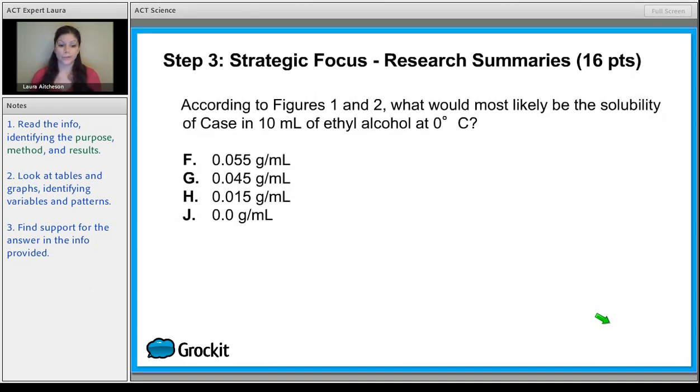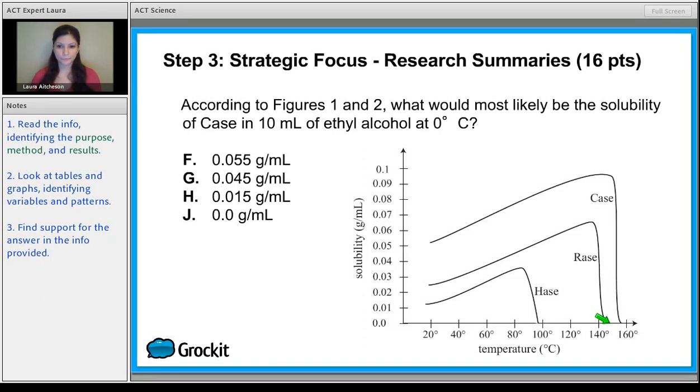According to figures one and two, we better have one and two ready. What would likely be the solubility of case in 10 milliliters of alcohol at zero degrees Celsius? We told you that you can assume that the trends will continue. So if we extend that line, we're going to go right to zero degrees Celsius, which is going to be over here. At that point, follow it up to figure out it's going to be right between 0.04 and 0.05. The answer choice is G. So you can always assume trends are going to continue. Being able to count on that is going to mean points for you on test day.